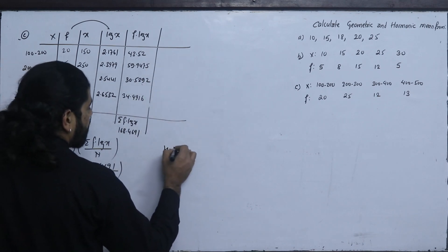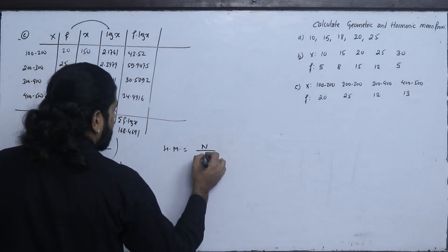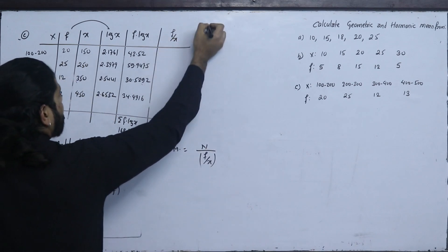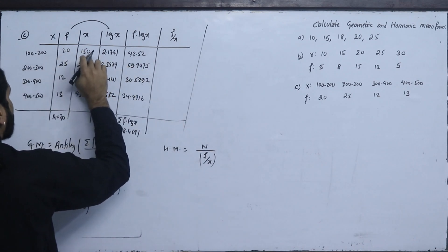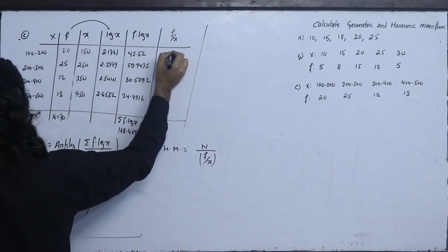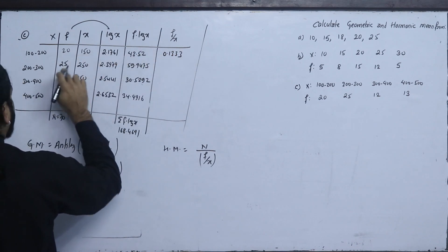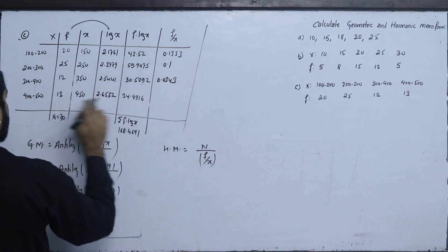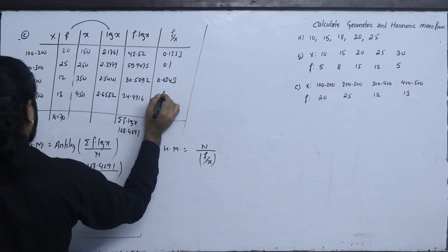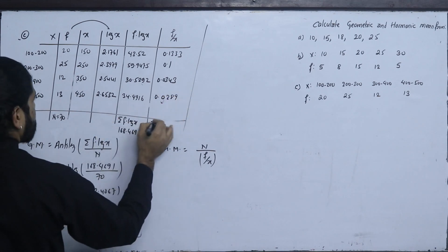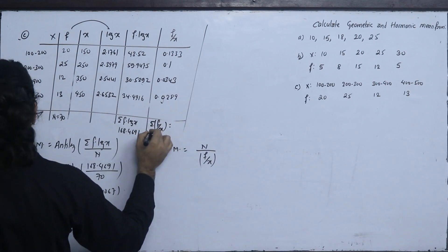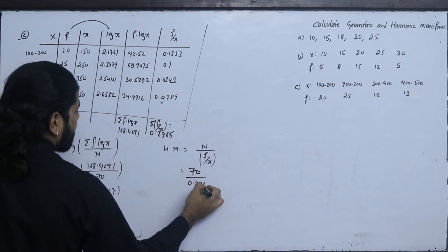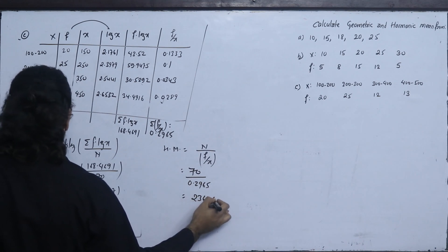For the harmonic mean of the continuous series, the formula uses f upon x with mid values. f/x: 20/150 = 0.1333, 25/250 = 0.10, 12/350 = 0.0343, 30/450 = 0.0289 — sorry, 13/450 = 0.0289. Summation f/x = 0.2965. Harmonic mean = N upon summation(f/x) = 70 upon 0.2965 = 236.08. This is the harmonic mean.